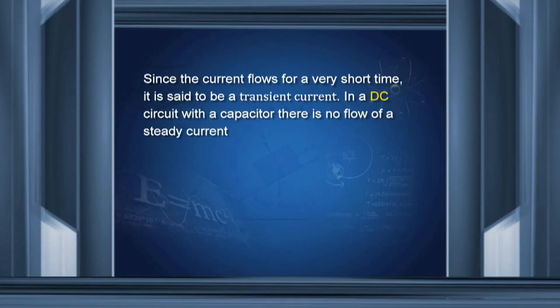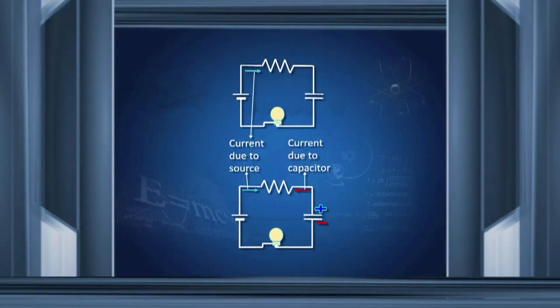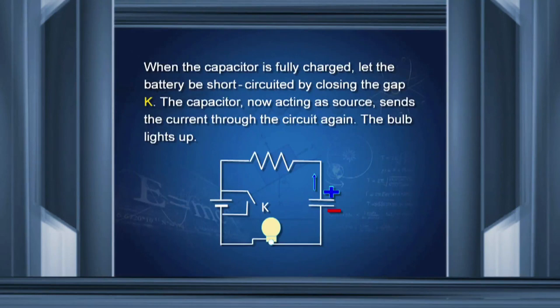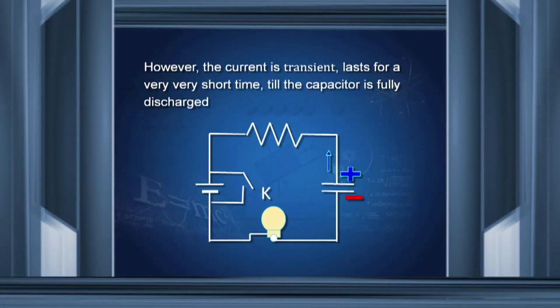Since the current flows for a very short time, it is called a transient current. In a DC circuit with a capacitor, there is no flow of steady current. If we short-circuit the battery when the capacitor is fully charged, the capacitor discharges through the resistance and for a very short time current flows through the bulb, but there is no steady current. This is important.